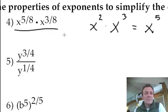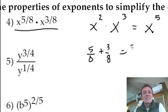I'm going to add the exponents. So what's 5/8 plus 3/8? That's what the exponents are. That's 8/8, which is just 1. So this is just x, or x to the 1, because I added the exponent. That's the answer to that one.